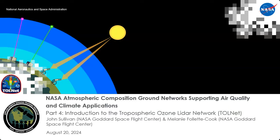Welcome back everybody. Today we're continuing our RSET training on NASA atmospheric composition ground networks supporting air quality and climate applications, with Part 4: Introduction to the Tropospheric Ozone Lidar Network, or TOLNet.